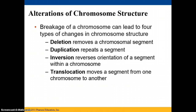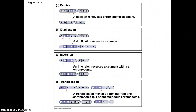Chromosomes themselves can also have alterations to their structures, which can lead to different types of conditions or diseases. You can have a deletion, where a portion of the chromosome is removed; a duplication, where a portion is repeated; an inversion, where the orientation of a segment is reversed; or a translocation, where one segment of a chromosome is attached to another chromosome. Here are visuals of each of those four types — pause and take a look.